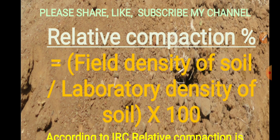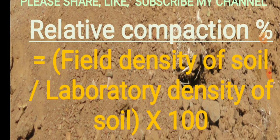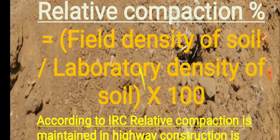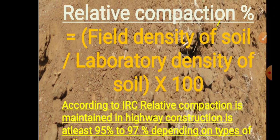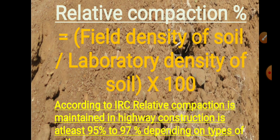This concept is used in construction of highways. The definition of relative compaction is: it is the field density of soil divided by the laboratory density of soil, multiplied by 100. We have to conduct both field density and laboratory density tests.